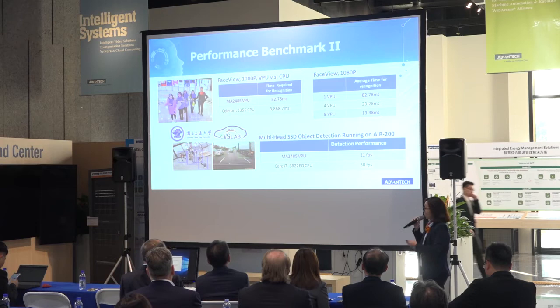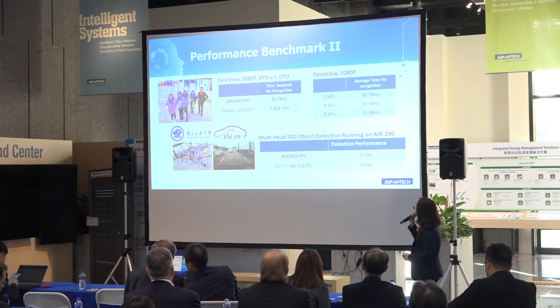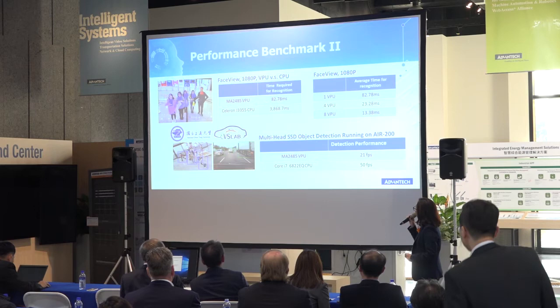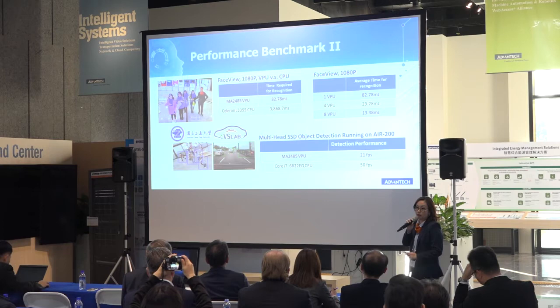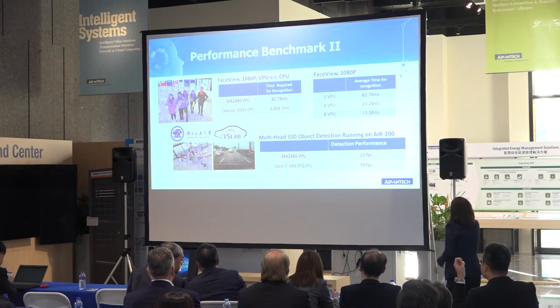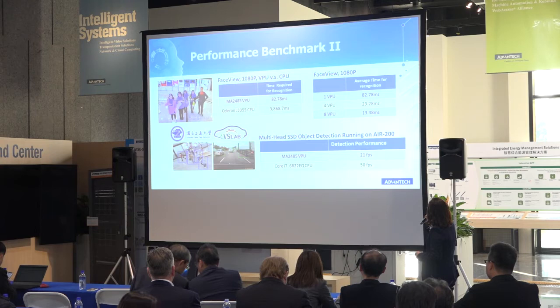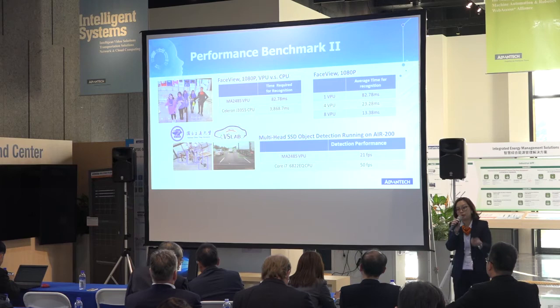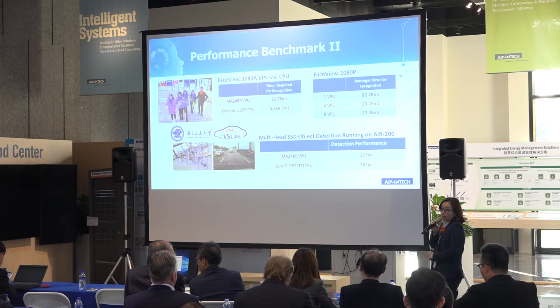Another benchmark I want to show you is face detection. We have face detection running on an internal VPU and another comparison running on a Celeron processor. You can see that we only use 82.7 milliseconds to recognize a face on the VPU, whereas the CPU needs much longer. This means that running visual recognition is better on a VPU than a CPU. And the scalable feature: if you're running on one VPU to recognize a face, that's 82 milliseconds. But if you're running together on eight VPUs, you will shorten the time tremendously — especially if I want to recognize everyone here in this room, about 100 persons.